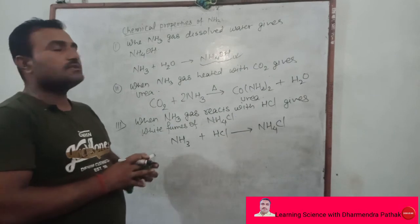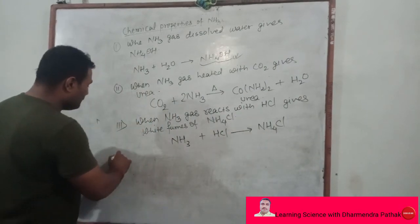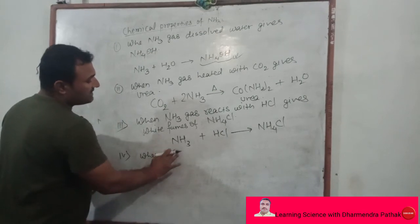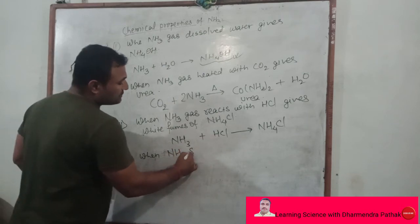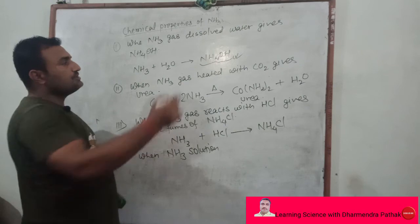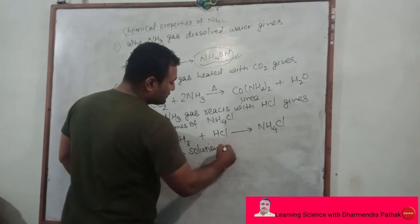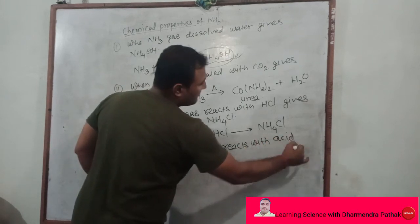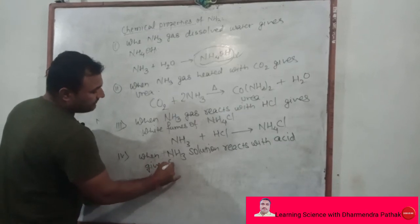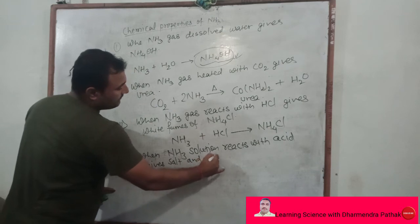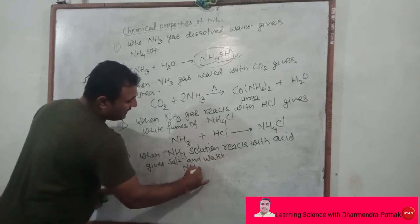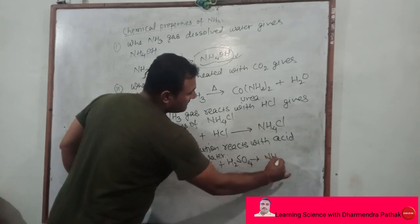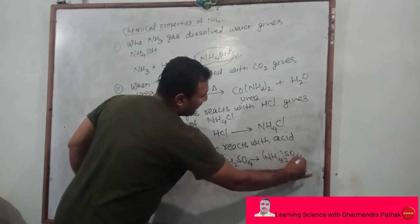When ammonia solution (ammonium hydroxide, formed when ammonia gas dissolves in water) reacts with an acid, it forms salt and water. For example, when ammonium hydroxide reacts with sulfuric acid, the salt formed is ammonium sulfate, along with water: 2NH4OH + H2SO4 → (NH4)2SO4 + 2H2O. In this way, ammonia reacts with various chemicals.